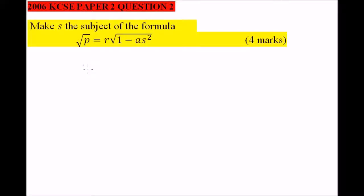To do that, we need to square both sides. When you square this square root, we have p equals r will be squared, and we get rid of this square root sign, so we have 1 minus as squared.